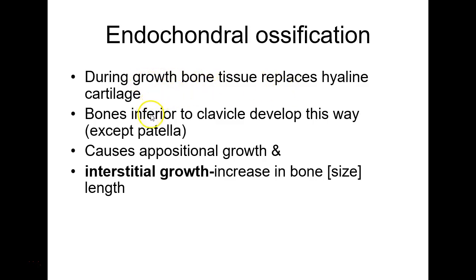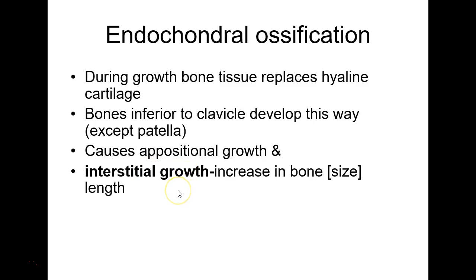Endochondral ossification: during growth, bone tissue replaces hyaline cartilage. Bones inferior to the clavicle, as a general rule, develop this way. If I show you a long bone like a humerus and ask what type of ossification, you go endochondral. If I show you a frontal or parietal bone, you go intramembranous. Remember: growth is how a bone is getting bigger. Appositional growth is growing in all three dimensions; interstitial growth is growing lengthwise from epiphyseal plates.